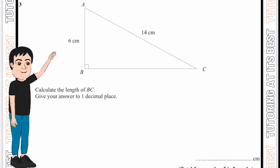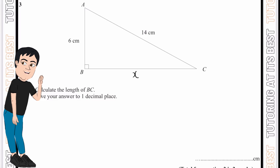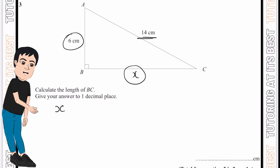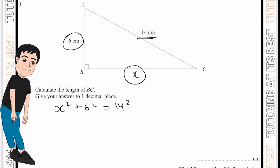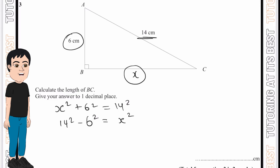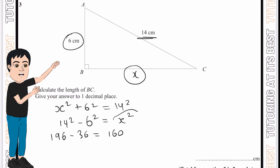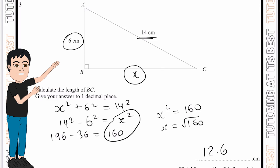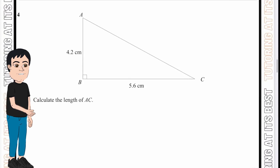Question three: calculate the length of BC — I'll label it x. We have two smaller sides and need to find the larger side, so x² + 6² = 14². Rearranging: 14² − 6² = x², which is 196 − 36 = 160. Therefore x = √160 = 12.6, and that proves it is a right-angled triangle.